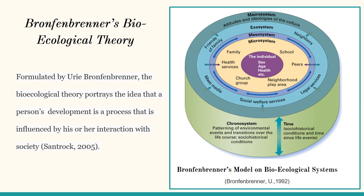According to Sandra 2005, the five systems in Bronfenbrenner's ecological theory are the microsystem, mesosystem, exosystem, macrosystem, and chronosystem.